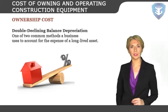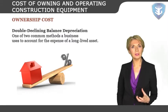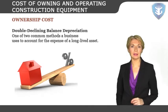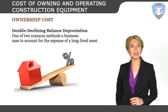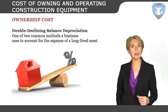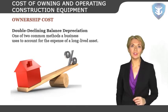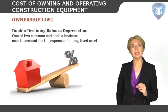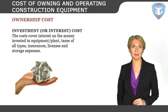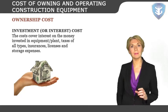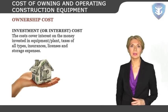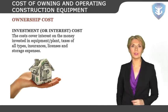Double declining balance depreciation is an accelerated method that counts twice as much of the asset's book value each year as an expense compared to straight-line depreciation. Investment or interest cost covers interest on the money invested in equipment, plant, taxes of all types, insurances, licenses, and storage expenses.